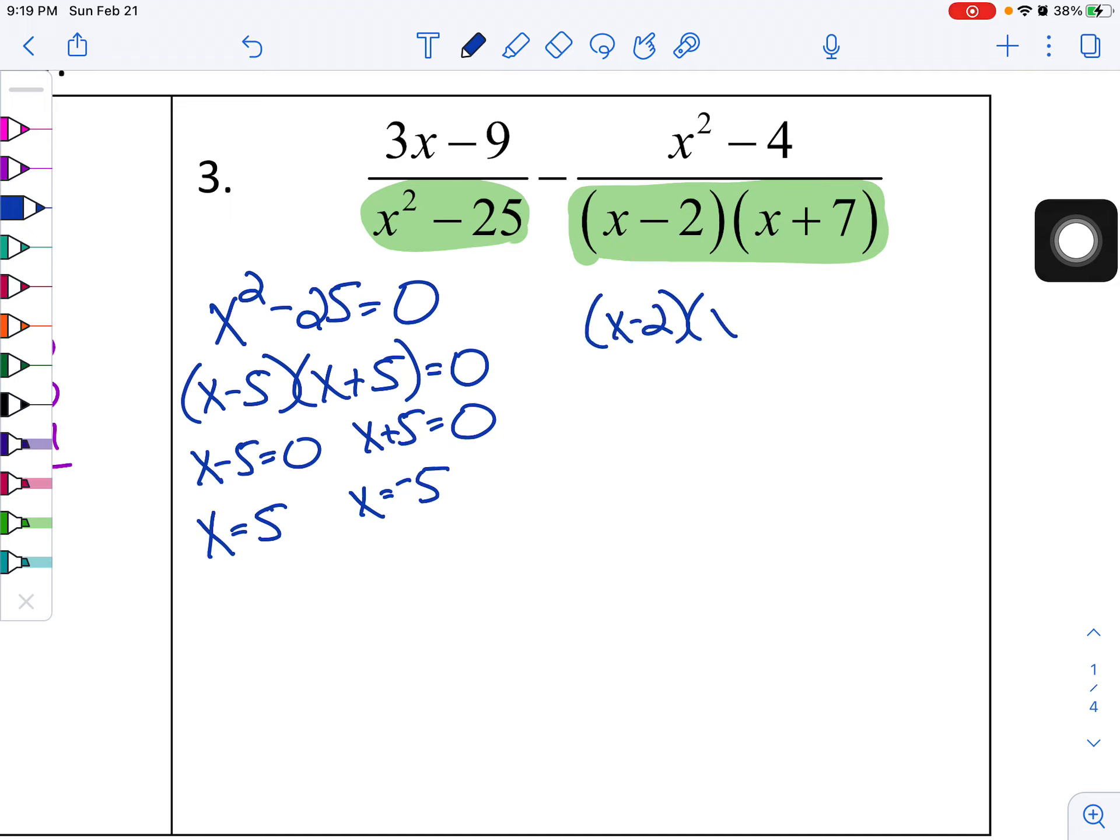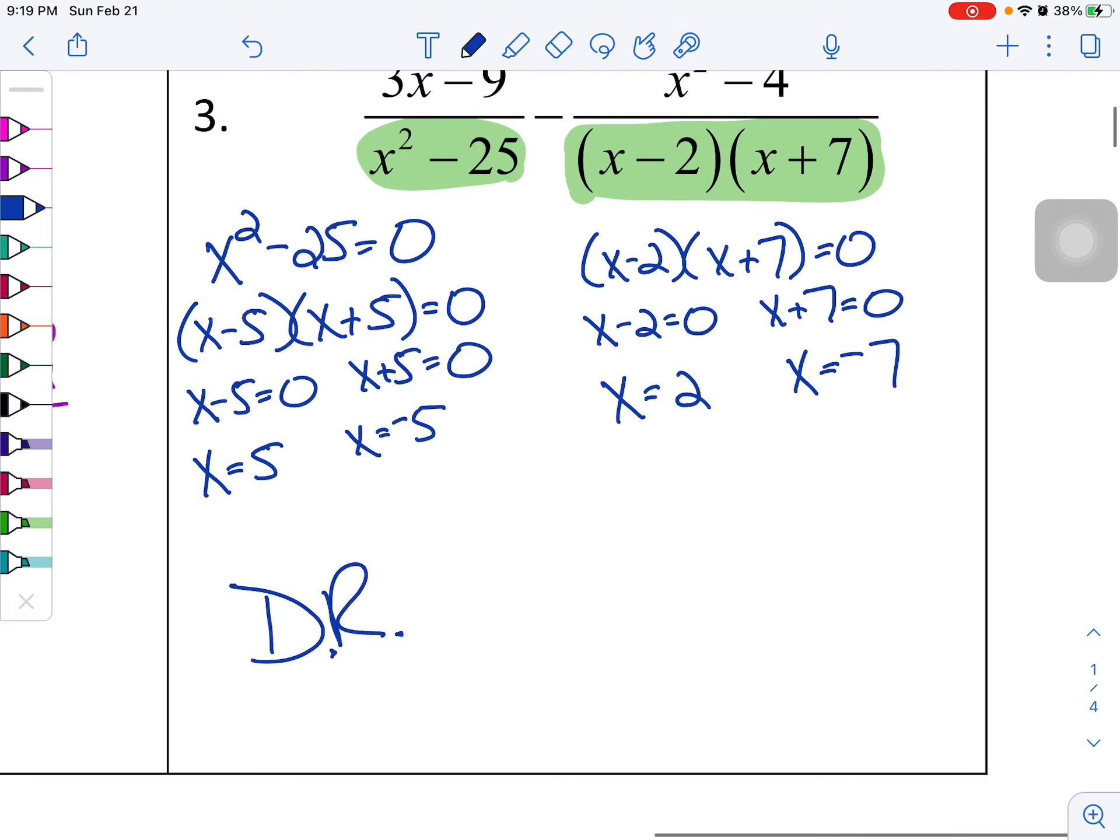Now I have this denominator. I'm going to set it equal to zero and set each individual factor equal to zero so I can solve it. That's going to get me x equals two and x equals negative seven.